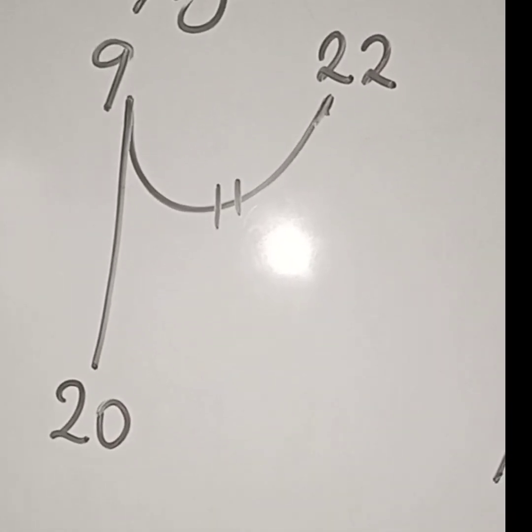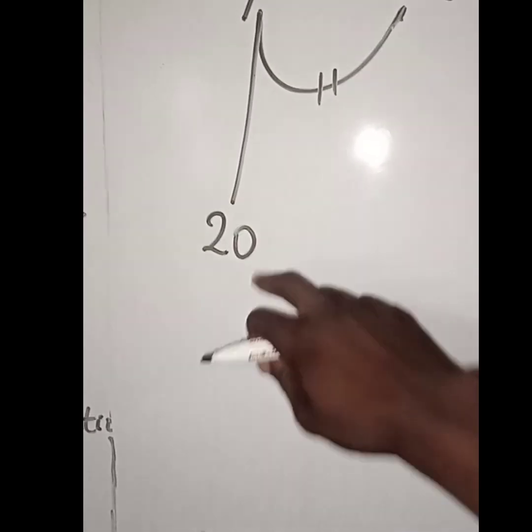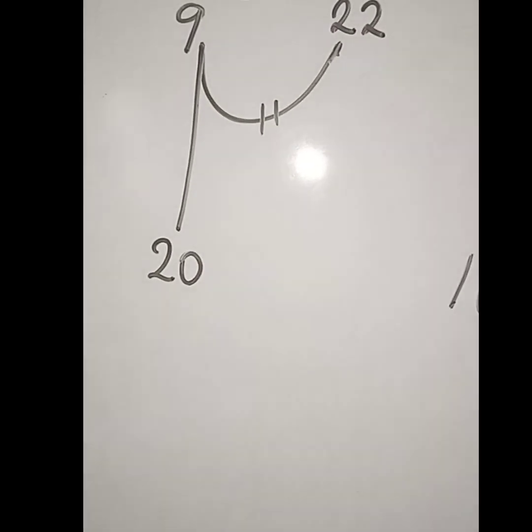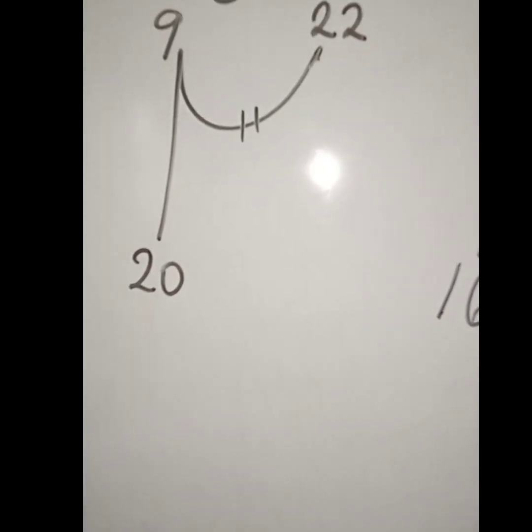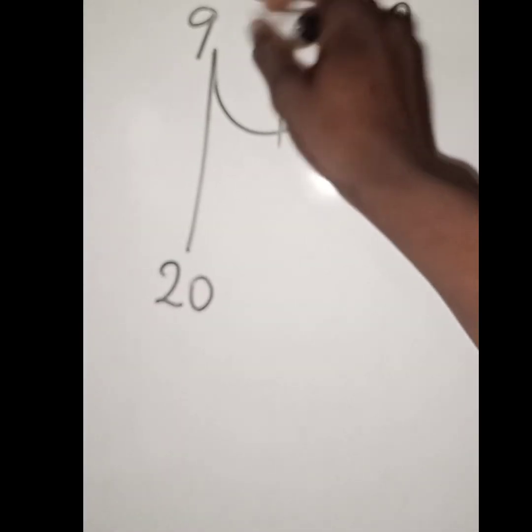It is very simple. If you want to get this 20 down, all you are going to do is divide this 22 by 2, then add the result by 9.